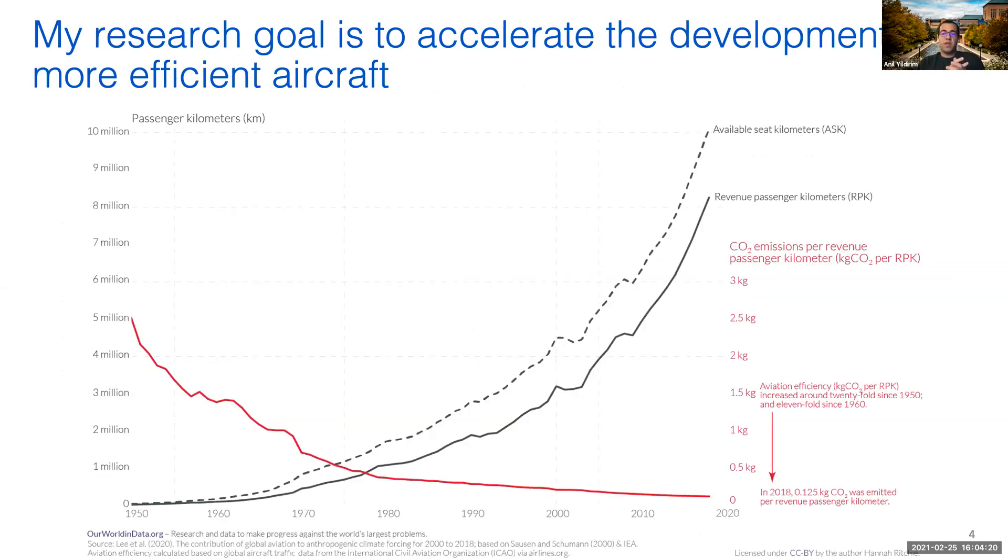This graph shows the size of the aviation industry in black and the emissions per passenger kilometer in red. The growth of the field has been balanced by improvements in aircraft efficiency so far, but these improvements start to plateau in recent years. My research goal is to make significant improvements in aircraft efficiency through two main approaches.